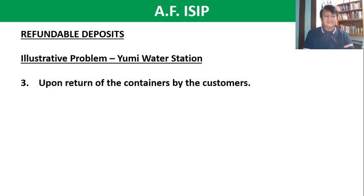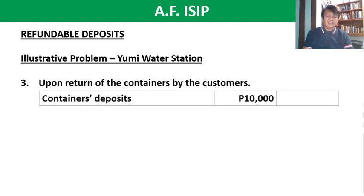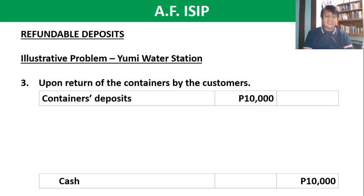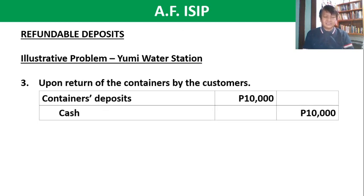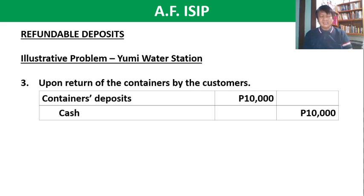For requirement number three, upon return of the containers by the customers: debit containers deposits 10,000 pesos, credit cash 10,000 pesos. This confirms why containers deposits are liabilities — because there is an obligation to return the amount. We eliminated the liability and credited cash 10,000 pesos.